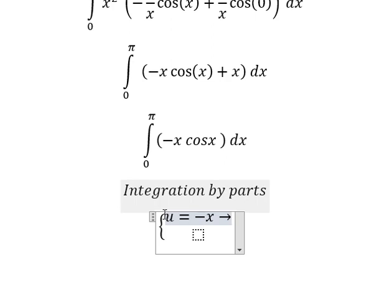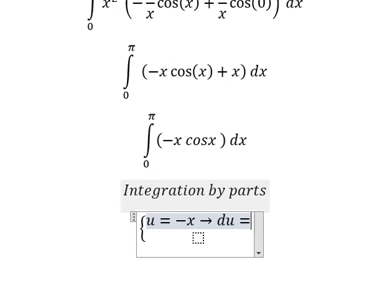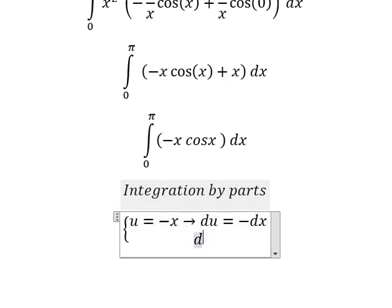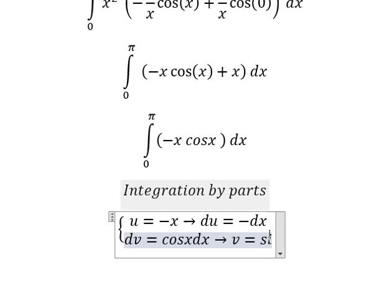Next we need to do the first derivative for both sides, and we have du = -dx. dv is cos x dx. The integration of this one, we have v equals sin x.